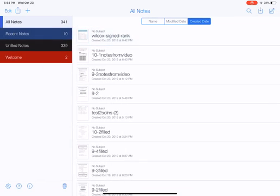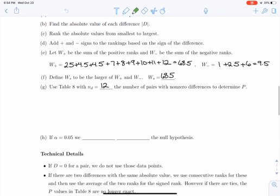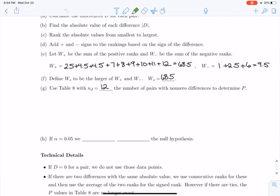So let's look at our p-value here. Here for WS being 68 and a half and our number of differences being 12, we got that the p-value was between 0.016 and 0.042.